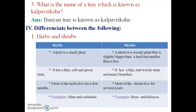Fifth question — What is the name of the tree known as Kalpavireksha? Answer: The banyan tree is known as the Kalpavireksha. It is considered a sacred tree. Many temples have banyan trees, and people gather around them. That is why it is called the Kalpavireksha — a sacred, wish-fulfilling tree.